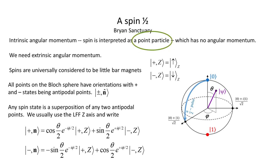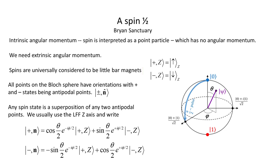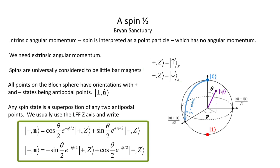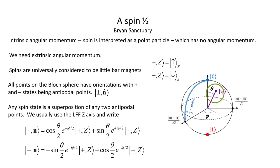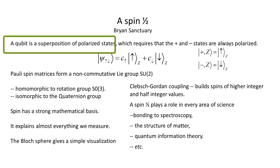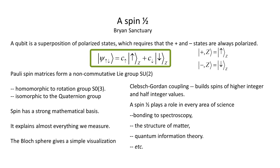Spin is interpreted as a point particle and called intrinsic angular momentum because a point particle can have no angular momentum. Spin is universally considered to be always in polarized states, like the little bar magnets pointing up and down. Spin can be displayed as a point on the Bloch sphere, with the plus and minus partners as antipodal points. The north and south poles are antipodal points of spin in the z-direction. Any spin state can be written as a superposition of any two antipodal points. We usually use the laboratory fixed frame in the z-direction and write any state in the direction n as a superposition of the two basis states. These states form other points on the Bloch sphere. A qubit is a superposition of two spin states of up and down, that is, a qubit is composed of only polarized states.